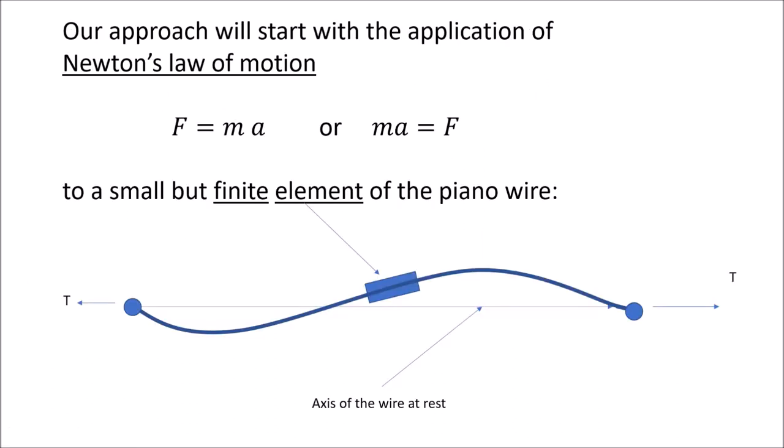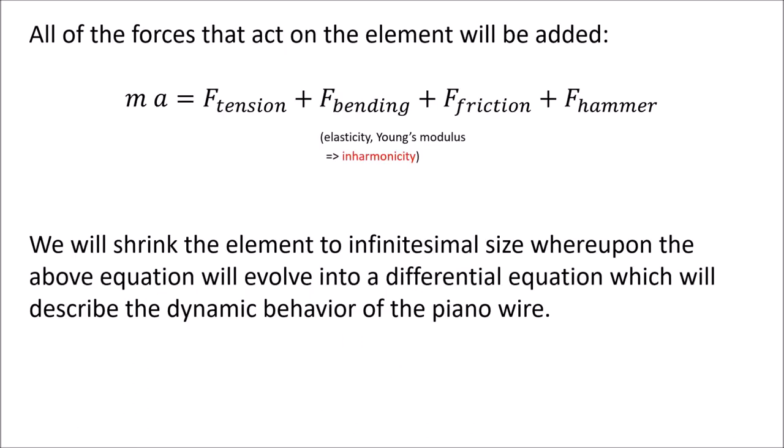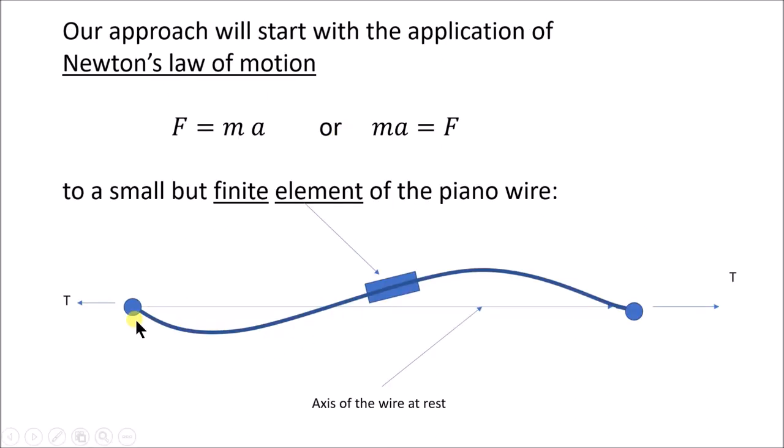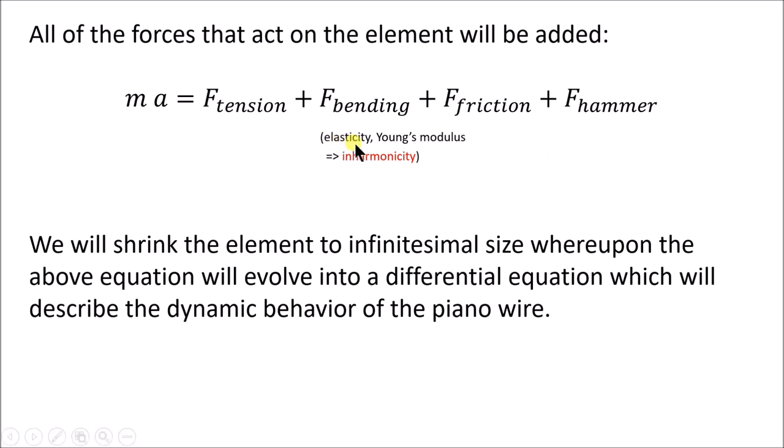For this element, we're going to add up the forces. First force is the force of tension, which is shown here with the T—a consequence of the fact that the string has been tuned. There's also a force against bending, which is a consequence of the fact that the wire is elastic. Anytime it gets bent because of vibrations, there's a resistance to that bending. For example, if you take number 15 piano wire and lay it on the table and bend it with your fingers, then release one end, it'll spring back to its previously undeformed state because it does not like to be bent.